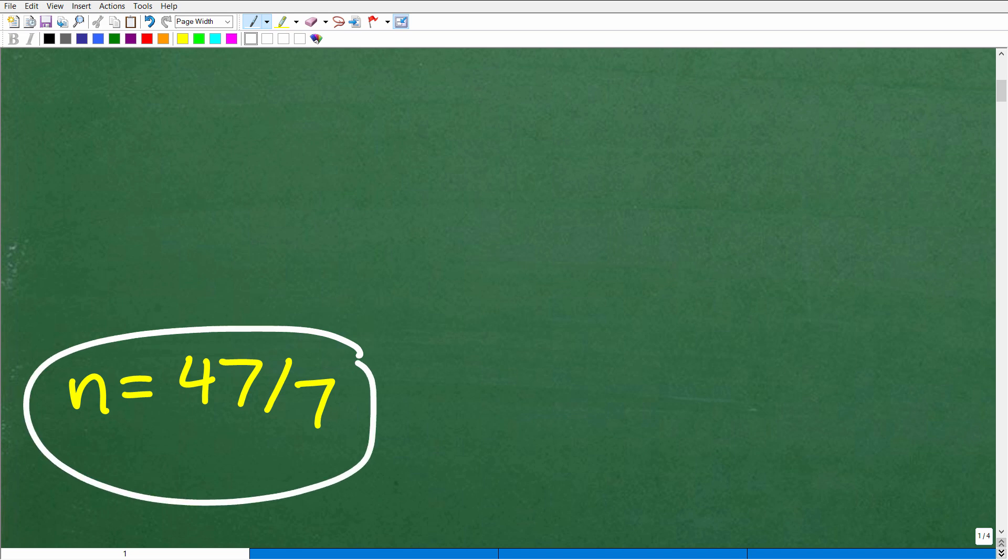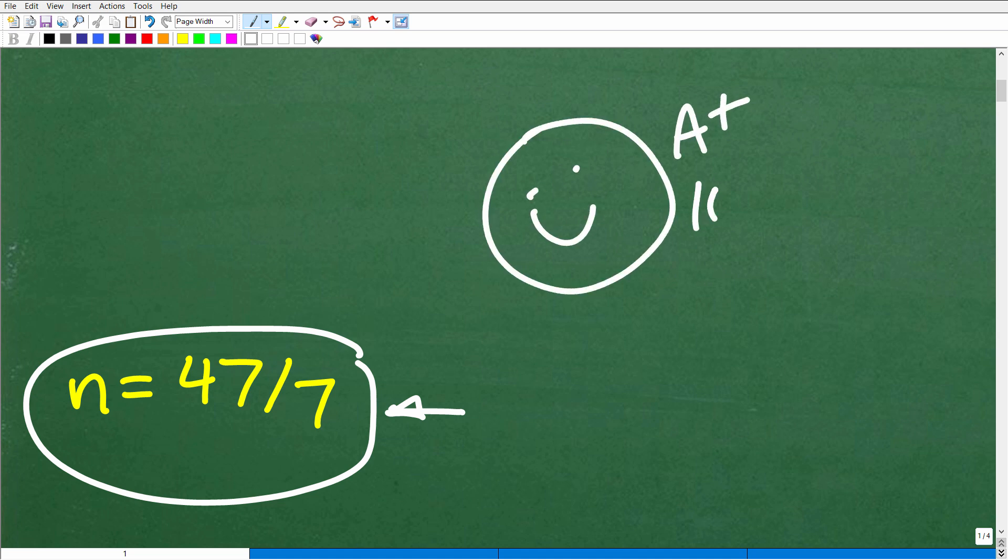Of course, if you took 47 and divided by 7 and got some decimal value, you can judge for yourself whether you got this right. But if you figured this out, that's outstanding. Let's give you a nice little happy face and A+, 100%, and a few stars so you can tell your friends and family that you were able to conquer a nice algebra word problem. They might even take you out to lunch or dinner.